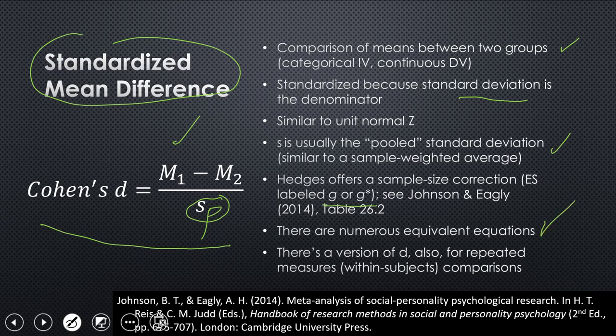There are numerous equivalent equations to calculate the standardized mean difference. We'll talk about those later. Not in this talk, but in a future talk if I get to it. And there's a version of D also that you can use for repeated measures. So very similar to this. It's just pre-test versus post-test. And you're dividing by the standard deviation of the pre-test conventionally. And if you want a name for that, it's Becker.